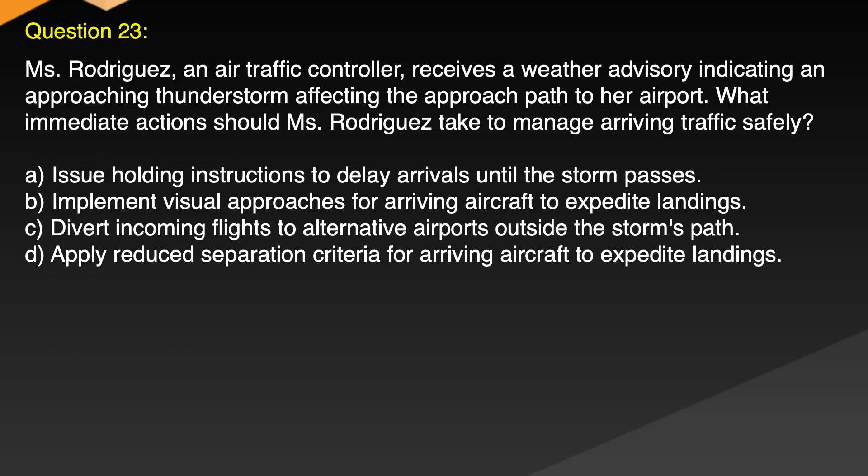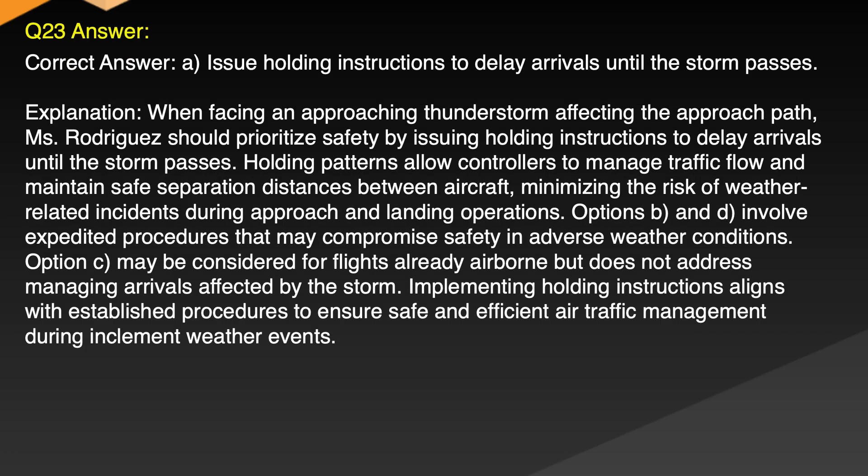Question 23. Emes Rodriguez, an air traffic controller, receives a weather advisory indicating an approaching thunderstorm affecting the approach path to an airport. What immediate actions should Emes Rodriguez take to manage arriving traffic safely? A. Issue holding instructions to delay arrivals until the storm passes. B. Implement visual approaches for arriving aircraft to expedite landings. C. Divert incoming flights to alternative airports outside the storm's path. D. Apply reduced separation criteria for arriving aircraft to expedite landings. Correct answer: A. Issue holding instructions to delay arrivals until the storm passes.